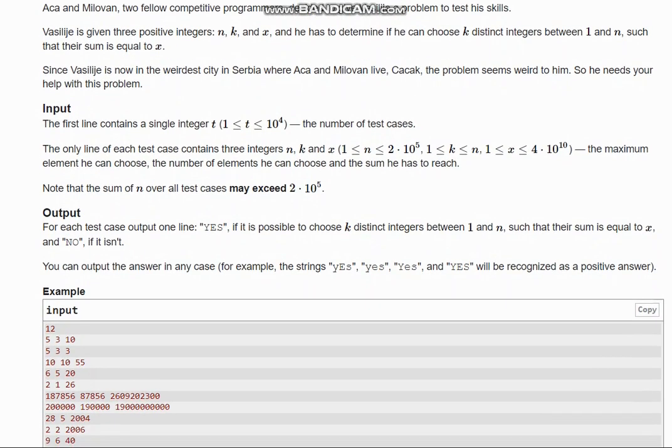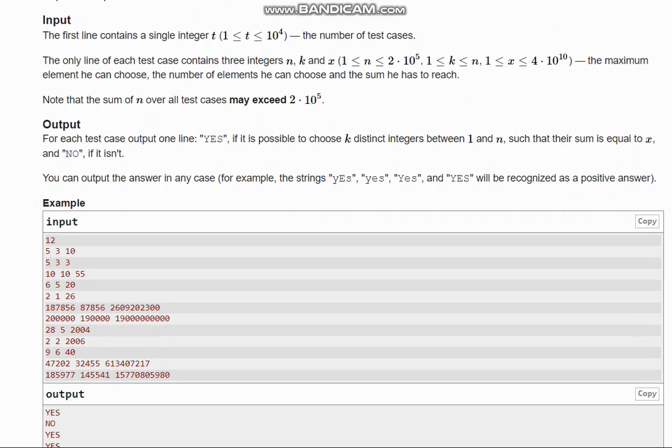So first we are given N which means maximum is 5 and he can choose 3 elements out of it and he has to give the sum 10. So he needs to choose between 1 to 5 and need to reach 10 and can choose any 3 elements.